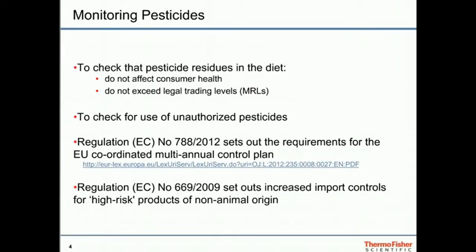In addition to these monitoring plans, there is another regulation, EC-669-2009, which sets out the need for increased import controls for products which are considered to be high risk. These are products which have been identified to contain high concentrations of pesticides through the rapid alert system within Europe, or from intelligence from laboratories or from audits. The expectation is that the analysis of these samples collected under this scheme will be very rapid.